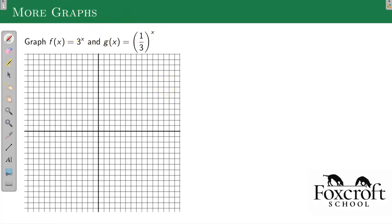So let's graph 3 to the x. I'm just going to do it quickly without making the chart. 3 to the x, if I put in 0, I get 1. If I put in 1, I get 3. If I put in 2, I get 9. If I put in 3, I get 27, which is like up there.